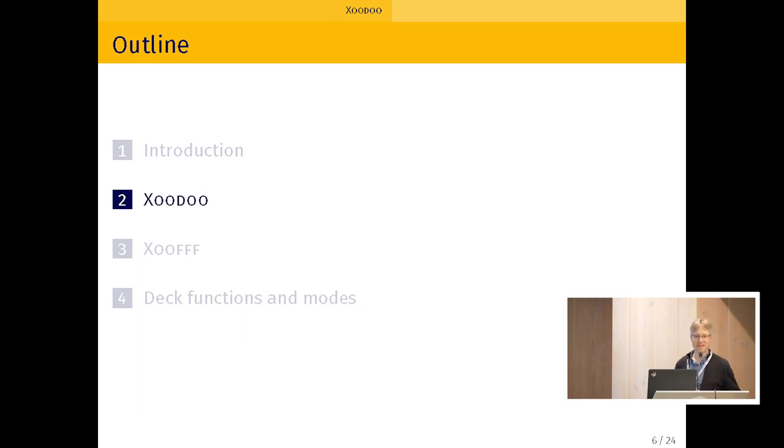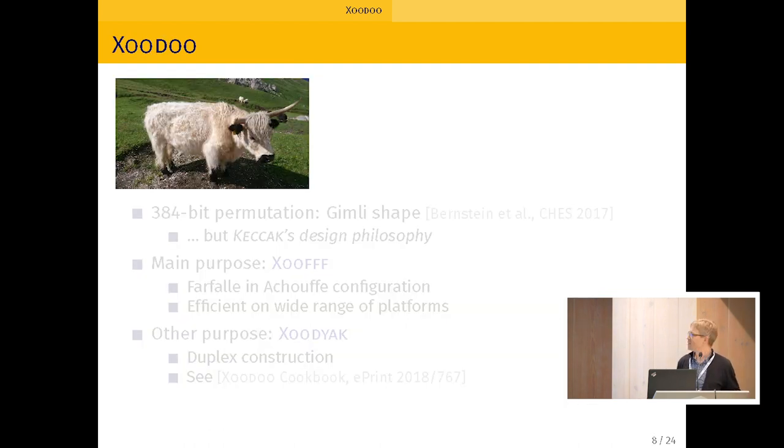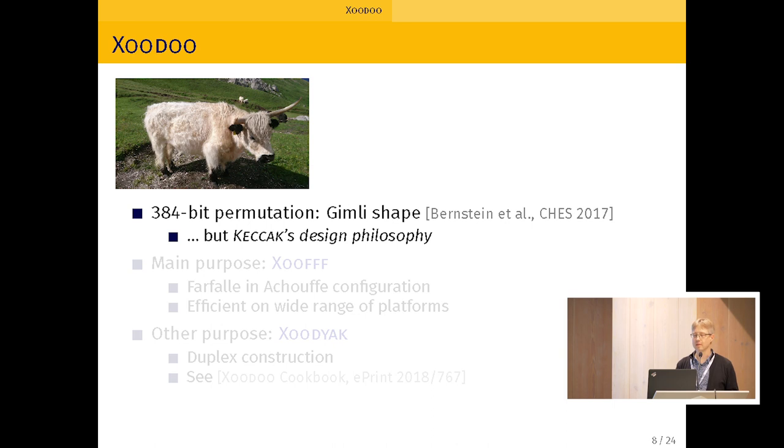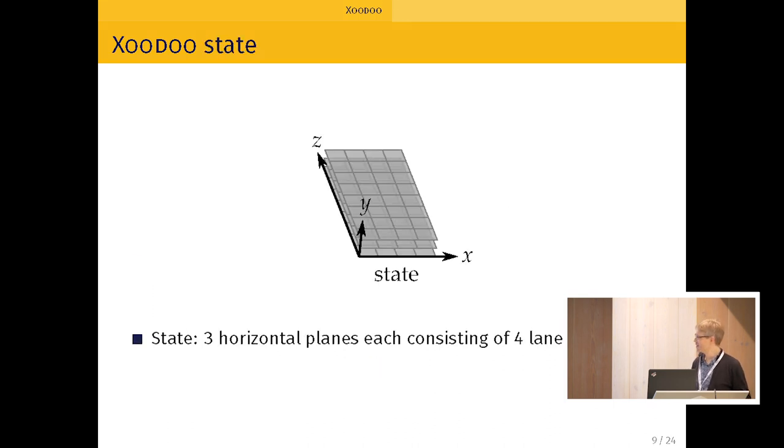And that's Zoodoo. So please meet the mascot of Zoodoo. So it's a very robust animal. Basically, Zoodoo takes a lot of inspiration from the Gimli permutation. So the Gimli permutation is defined on 12 words of 32 bits, so it fits nicely in the registers of typical ARM processors. We reuse that idea. But the round function itself is more inspired from Keccak components than anything else. And our main purpose is to plug this permutation into Farfalle, and the result is called Zoof. Another purpose is to plug it in the duplex construction. The result is called Zoodiac, available in the Zoodoo cookbook, but that's not the purpose of this talk.